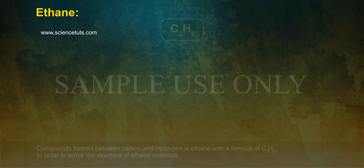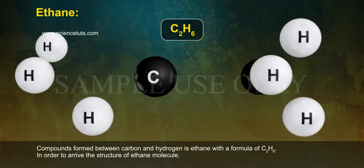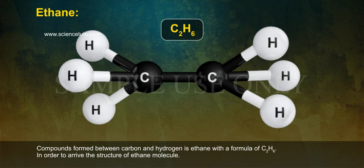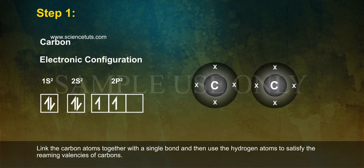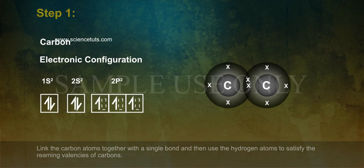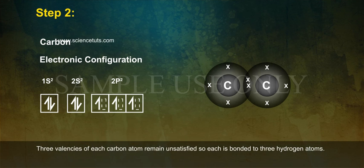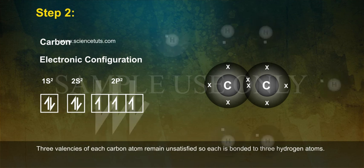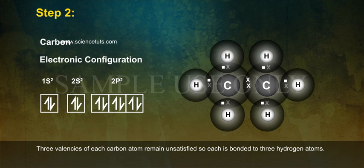Ethane: compounds formed between carbon and hydrogen is ethane with a formula of C2H6. In order to arrive at the structure of the ethane molecule, Step 1: link the carbon atoms together with a single bond and then use the hydrogen atoms to satisfy the remaining valencies of carbons. Step 2: 3 valencies of each carbon atom remain unsatisfied, so each is bonded to 3 hydrogen atoms.